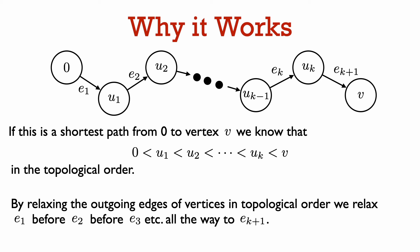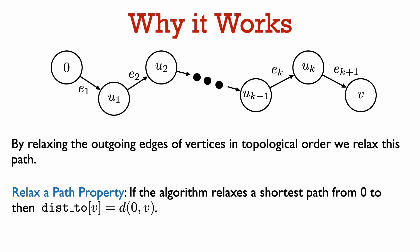So in other words, we know that we will relax this path. Therefore, we can again apply the relax a path property to see that at the end of the algorithm, we will have dist[v] equal to the distance from 0 to v.